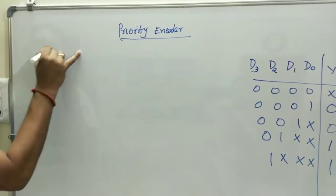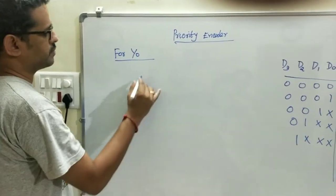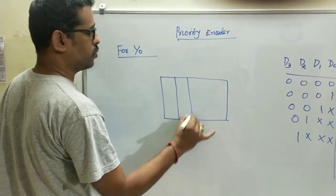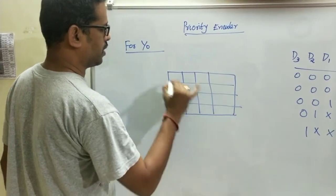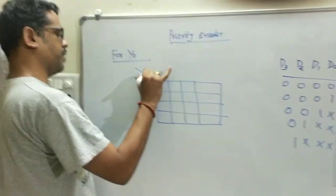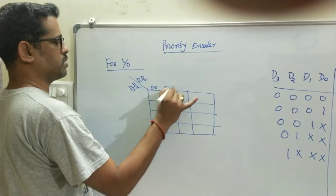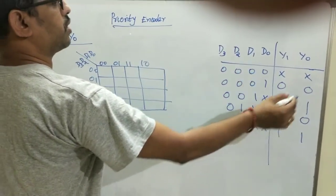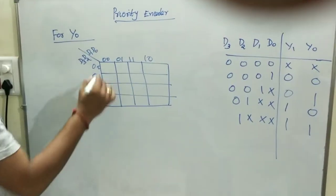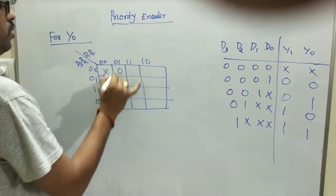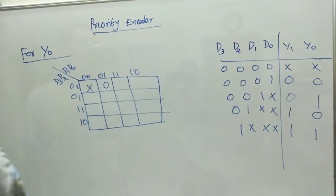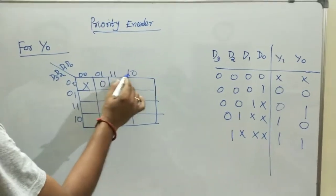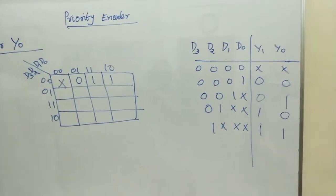Now we will find the output for Y0. We fill the K-map cells: when D1 is 1 in two cases, we put 1 here. When D2 is 1 the output is 0, so we put zeros for those cells. When D3 is 1 we put the output as 1.